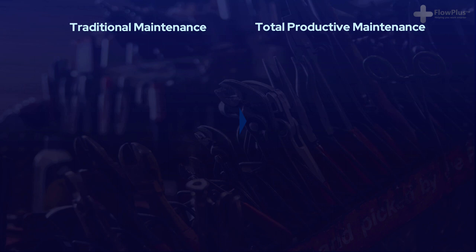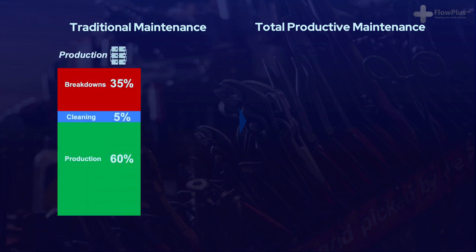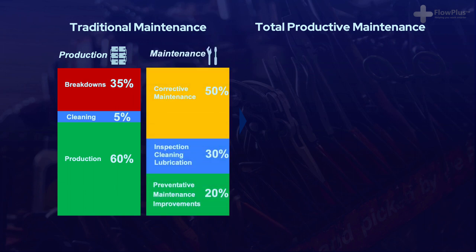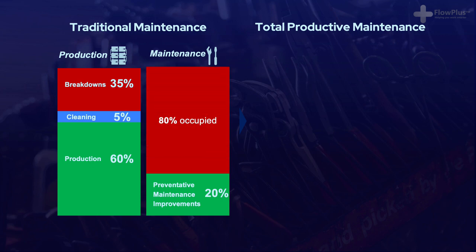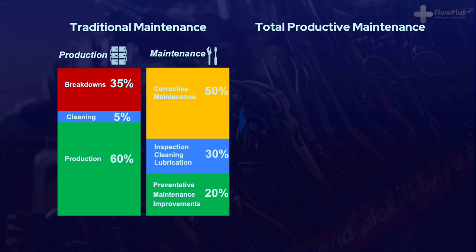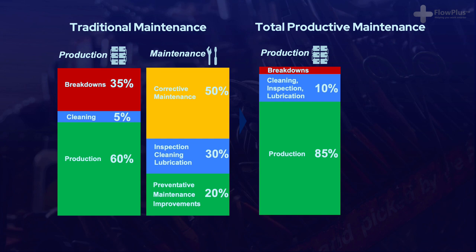A good way of demonstrating the TPM shift is by looking at the makeup of both production and maintenance staff times and what they do. With a traditional maintenance strategy, production operators spend roughly 35% of their time with their machine broken down, 5% of their time cleaning their machine, and the remaining 60% of the time in its operation. The maintenance staff spend roughly half their time firefighting and correcting problems, 30% of their time carrying out basic maintenance tasks such as inspection, diagnosis and lubrication, with 20% time remaining for proactive preventative maintenance improvements. The highly skilled maintenance staff have roughly 80% of their time taken up fixing things, running between problems and carrying out work that they're overqualified to do.